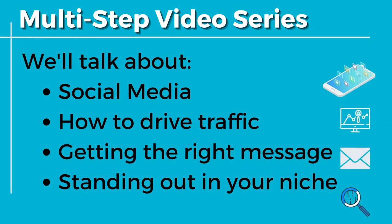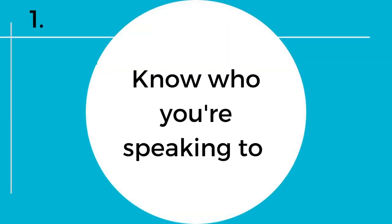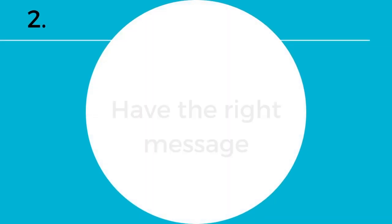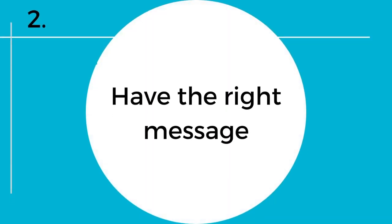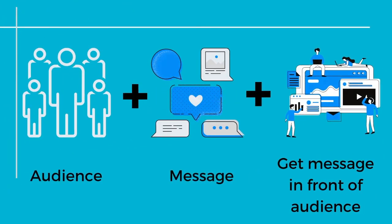Really at its core, this is the takeaway for today as we introduce the big picture. Marketing at its simplest form — whether you're an accounting firm, a startup, or whatever you may be — comes down to this: having the right audience, knowing who you're speaking to, then having the right message, the right language and value conversation for that audience, and then taking that message and getting it in front of that audience. It's the right audience, the right message, and then getting that message to that audience.